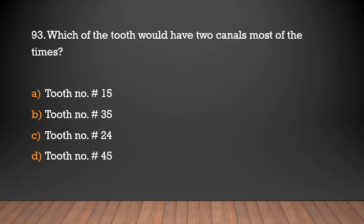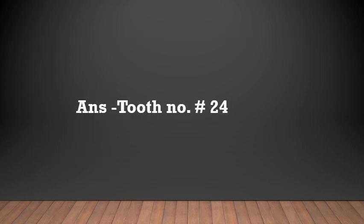Which tooth would have two canals most of the times? Tooth number 15, tooth number 35, tooth number 24, tooth number 45. Answer: Tooth number 24. Maxillary first premolar contains two canals most of the times.